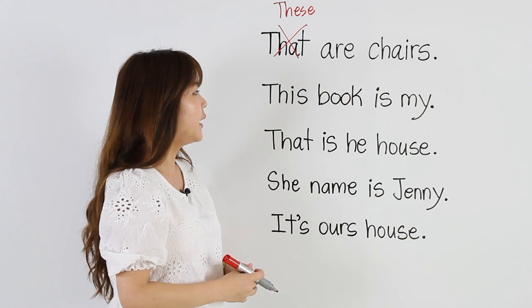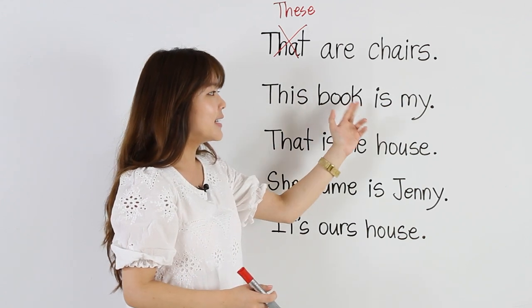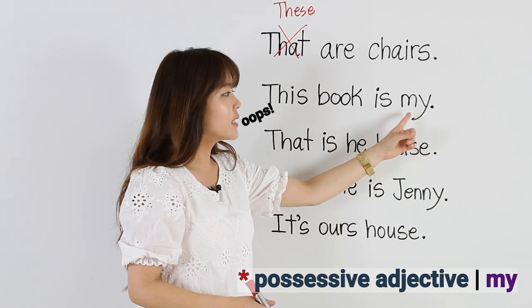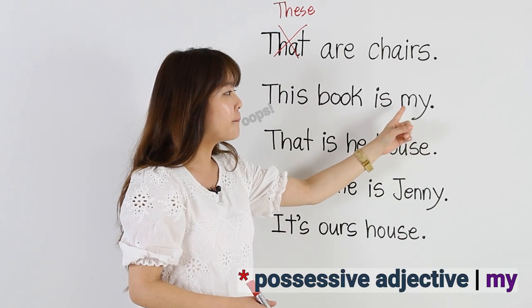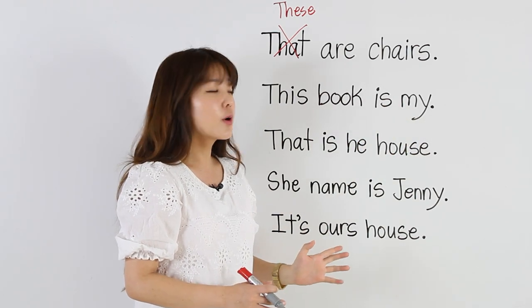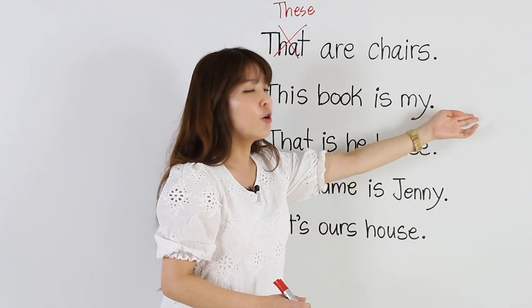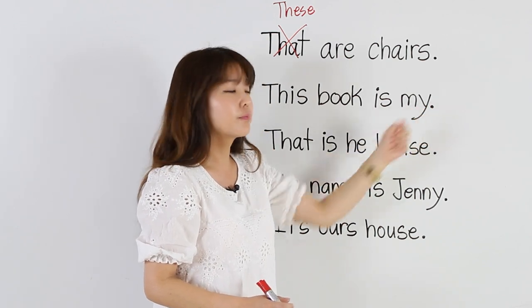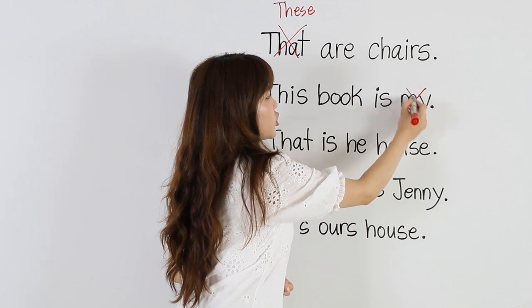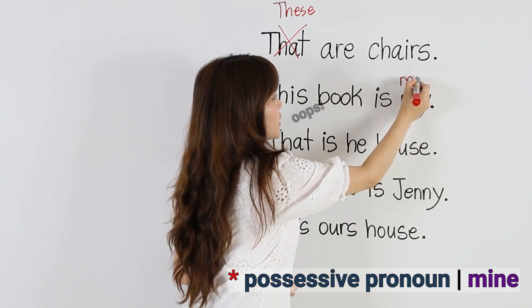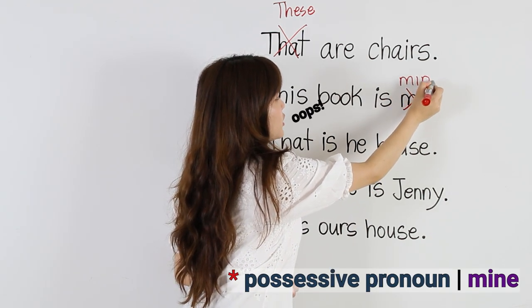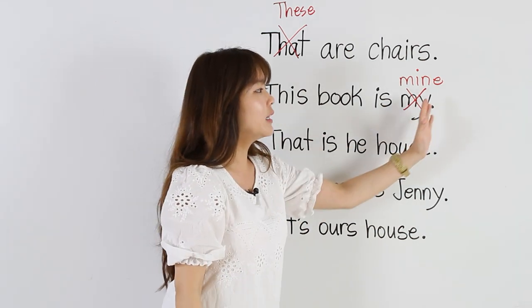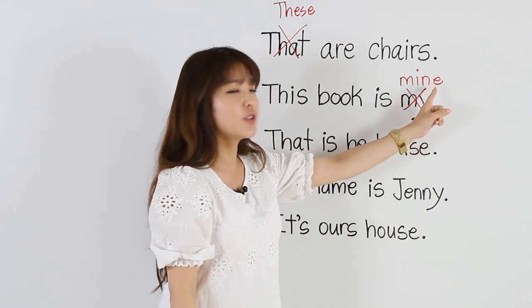'This book is my.' We have the possessive adjective 'my', but remember, you have to have a noun after it. There's no noun here. So we can change this to the possessive pronoun 'mine': 'This book is mine.' You don't need a noun if you say 'mine.'